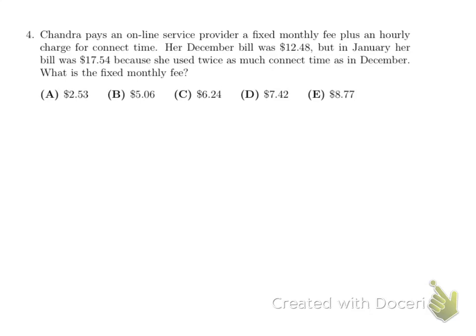Let's look at number 4 here. Chandra pays online service provider a fixed monthly fee plus the hourly charge for the connect time. Now, I don't know how much they spent, but on December, she had to pay $12.48. And in January, it was this much, because she used twice as much connect time as in December. So then, since I don't know how long the connect time was, so when it was equal to x, it corresponded to 12.48.